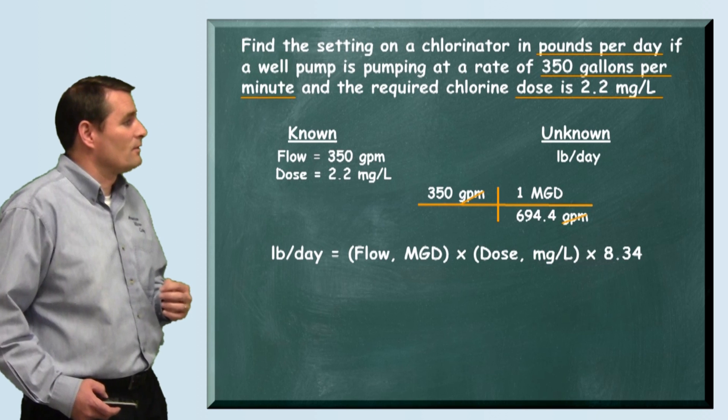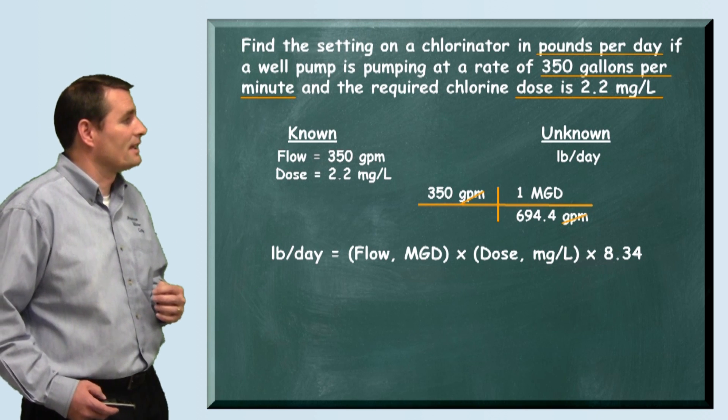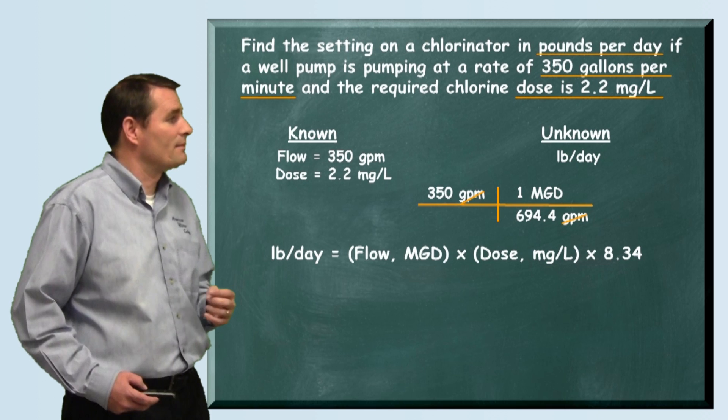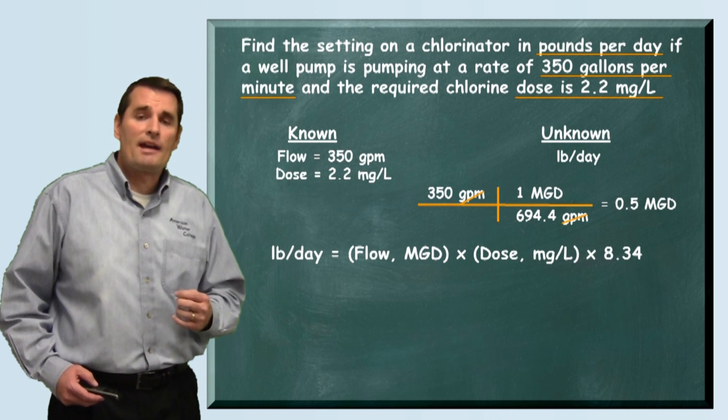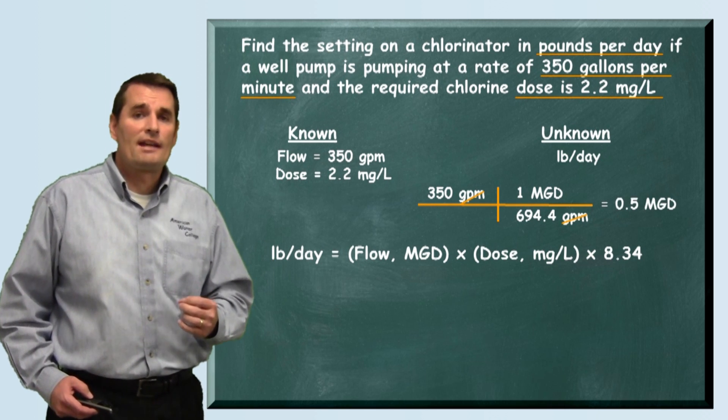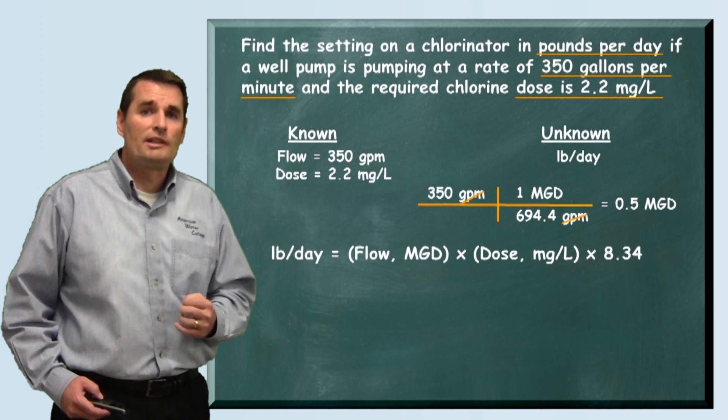Now that we load it into our matrix like this, you can see that the gallons per minute cancel each other out and we're left with MGD. And when you do the math we see that we're flowing at a rate of 0.5 million gallons per day.